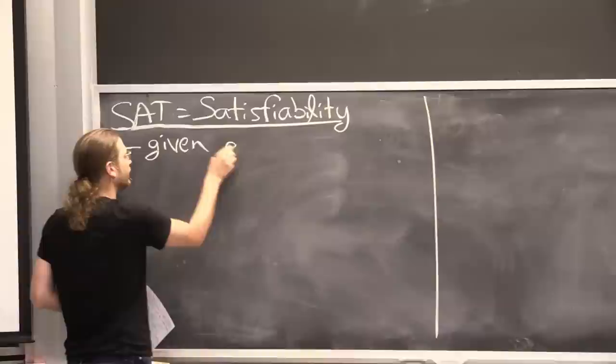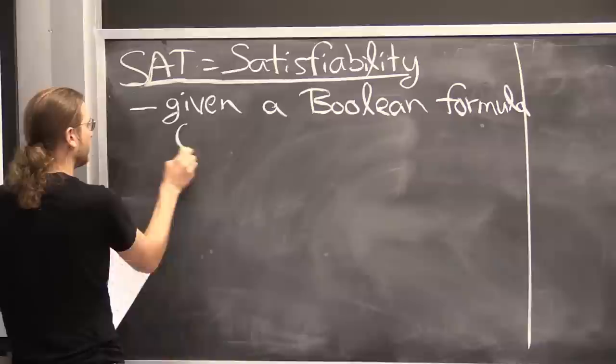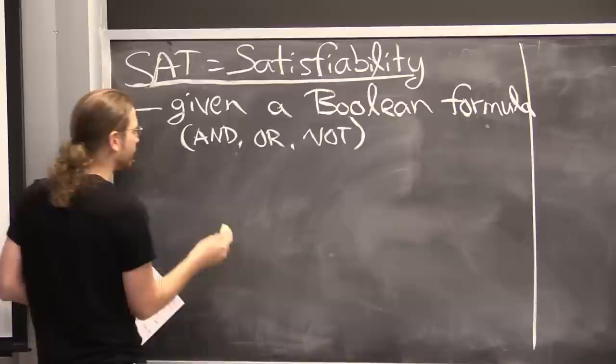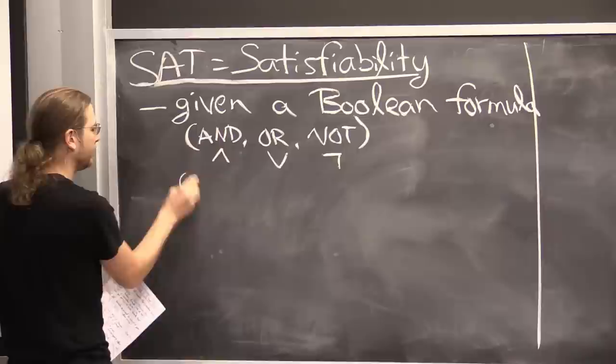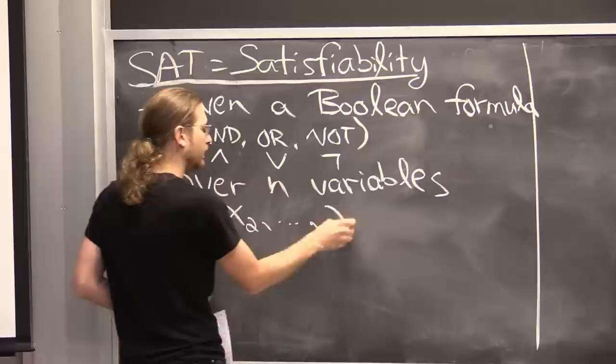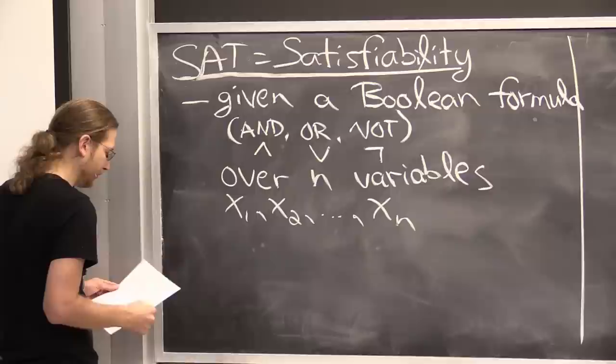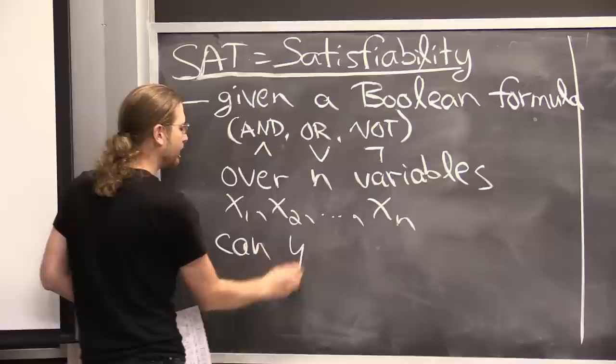The original SAT problem: you're given a Boolean formula over the operators AND (∧), OR (∨), and NOT (¬). It's over n variables x1, x2, ..., xn. You're not given true or false directly, although you can construct them — for example, x1 AND NOT x1 is never true (false), and you can negate that to get true. The question is: can you set the variables to make the formula true?